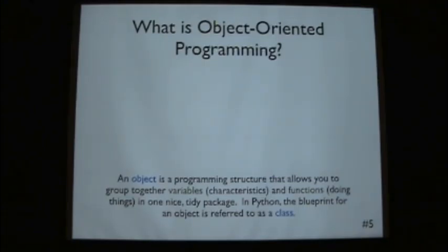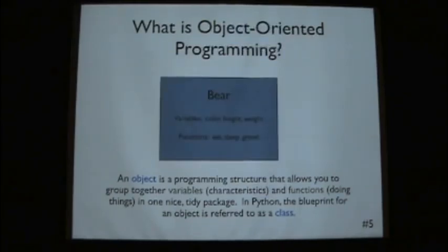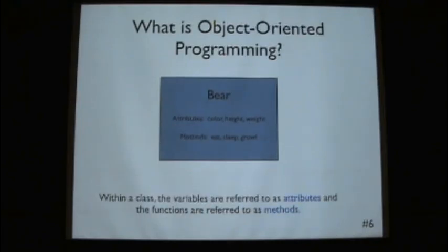So in Python, to do object-oriented programming, we have a notion of a class. So a class is basically an object in Python. So we could have a class called bear. It takes in variables such as color, height, weight, and it has functions, you can do stuff. So within a class, variables are referred to as attributes and functions are referred to as methods. I'll probably mess that up at some point during this lecture, but this is kind of the standard way that you talk about characteristics and functions within a class.